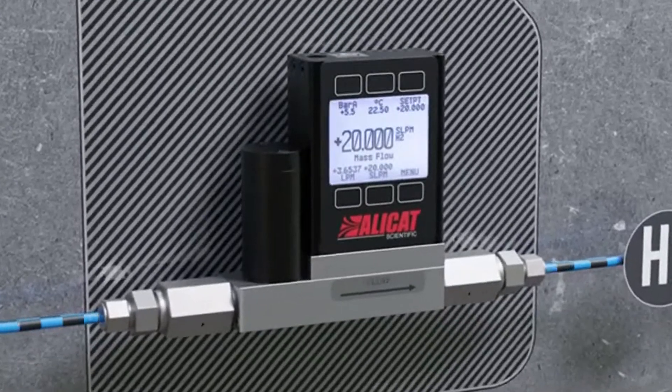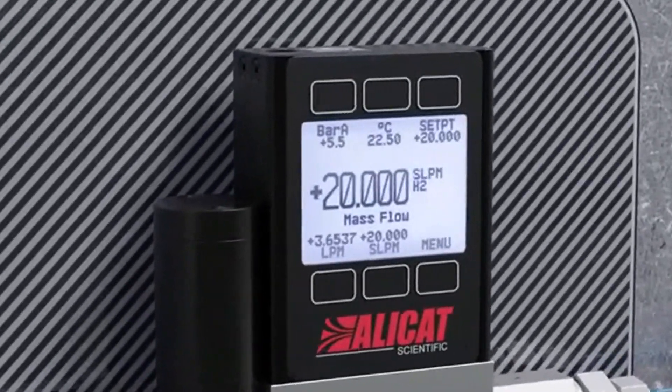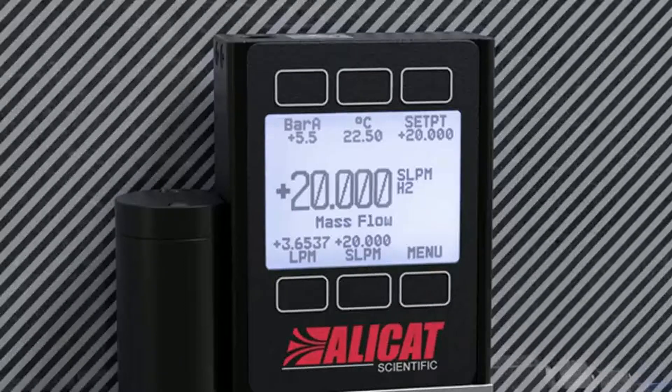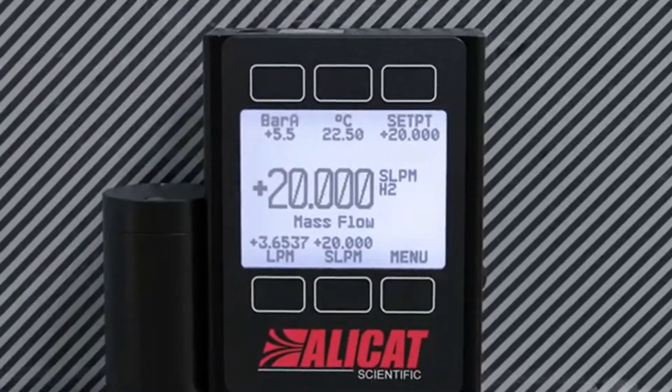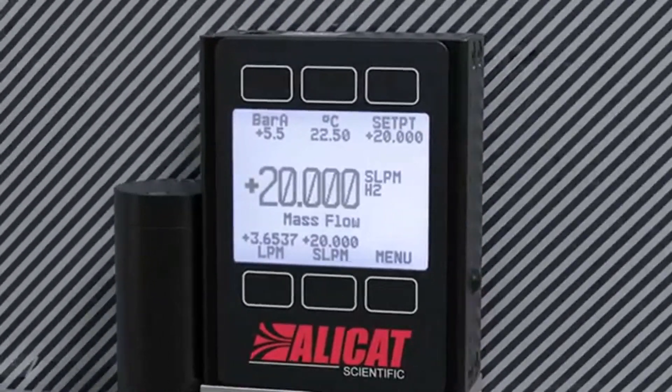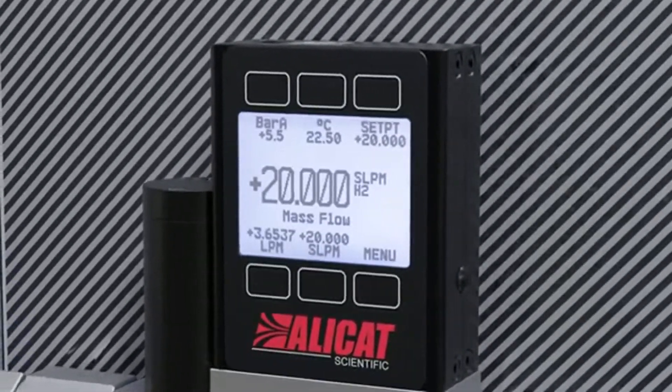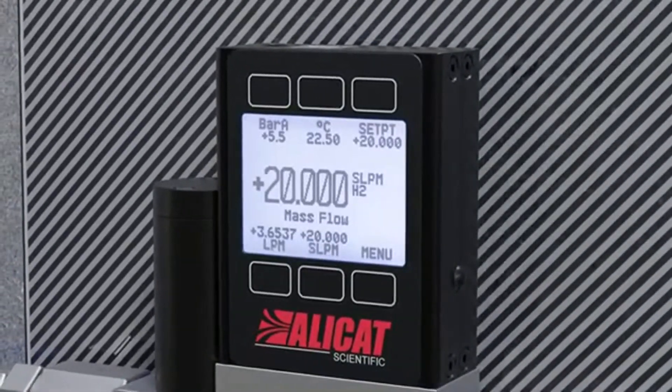Each device is calibrated to flow over 98 gases with no need for correction factors. This means instruments provide accurate and repeatable mass flow readings no matter the gas. Easily switch between gas types using the front panel display.